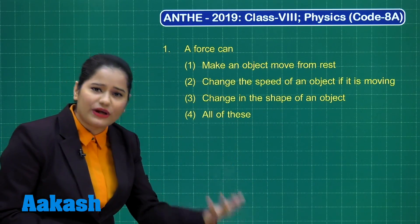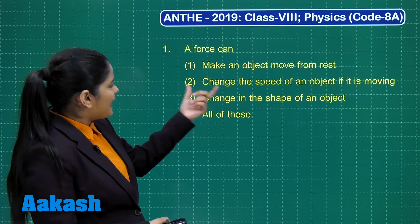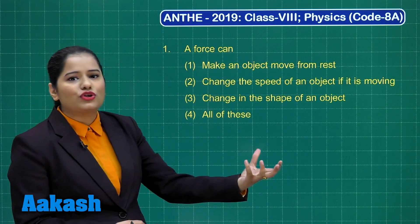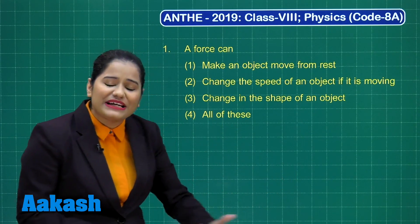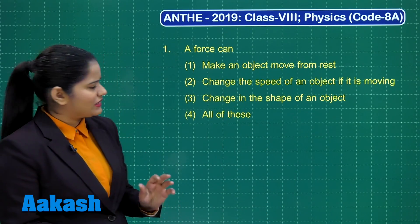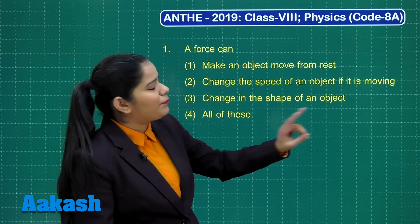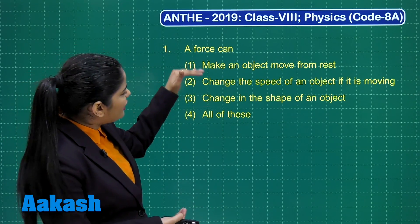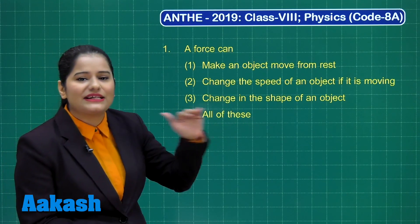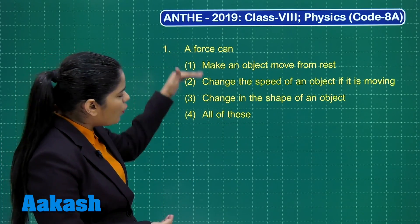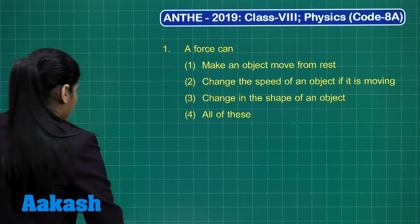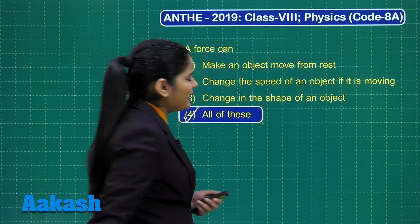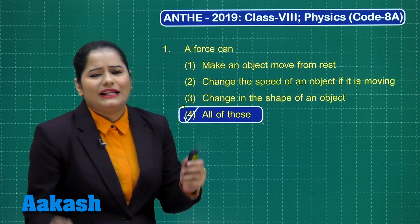A force can move a stationary object. The second option says a force can change the speed of an object if it is moving — yes, applying force on a moving object alters its speed. The third option says a force can change the shape of an object — yes, that is also correct. So all three options are correct, meaning a force can do all these things. Hence, the correct answer is option four.